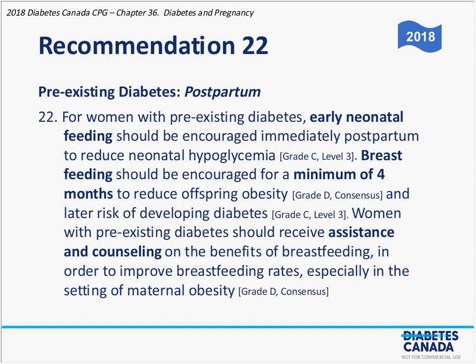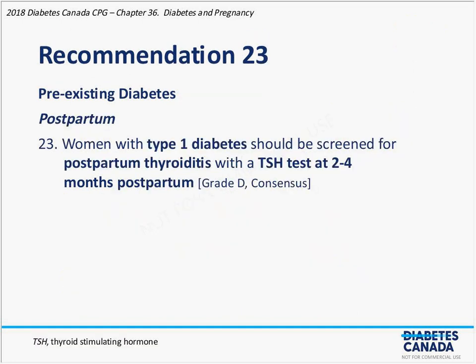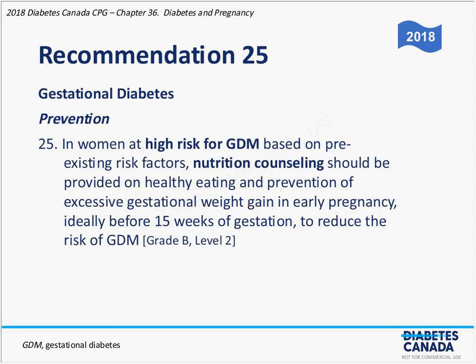Benefits of breastfeeding continue for up to two years postpartum. One thing unique to type 1 diabetes is the high rate of autoimmune thyroid disease in these women. If positive TPO antibodies are identified either preconception or in the first trimester, we should be looking for development of postpartum thyroiditis with TSH testing six to twelve weeks postpartum. Before moving on to the gestational diabetes section, let's open it up for questions.